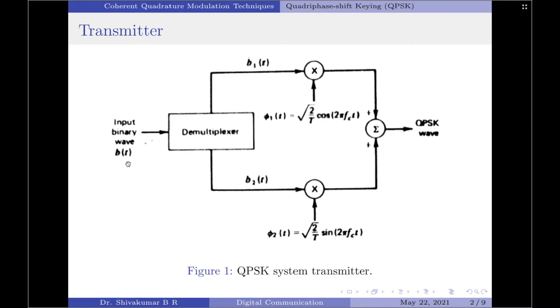The system will take two bits of information at a time, and two bits of information is generally called a dibit. Further, the two binary waves b1(t) and b2(t) are then given to two product modulators that are fed with a pair of quadrature carriers.